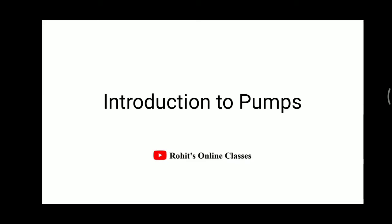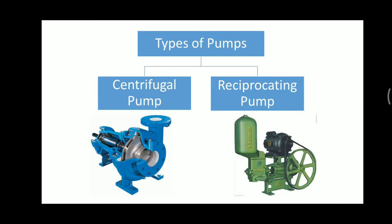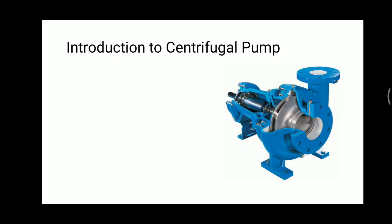Today's topic is introduction to pumps. There are two types of pumps: the first type is the centrifugal pump, and the second type is the reciprocating pump. The reciprocating pump works similar to an engine — it has one cylinder and a piston reciprocating in it. We will discuss the centrifugal pump and the reciprocating pump one by one, covering their working, advantages, disadvantages, and applications.